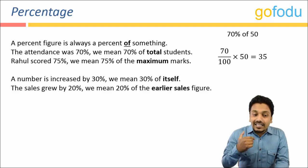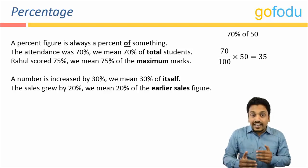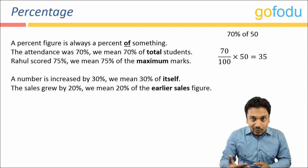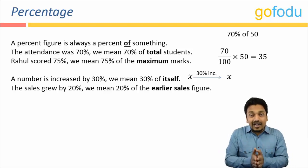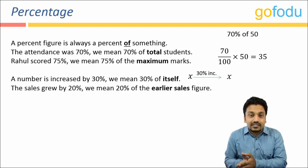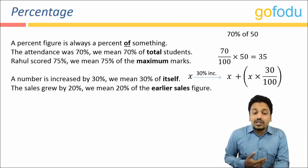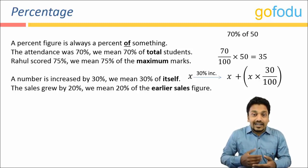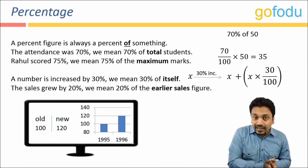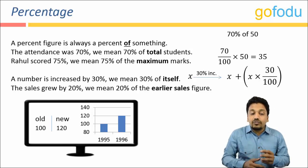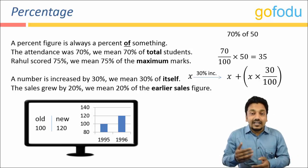If a number is increased by thirty percent, that means thirty percent of the number itself, since only one variable is involved. So if I take a number X increased by thirty percent, I add the increment — which is thirty percent of X, that is thirty upon hundred into X — to the original number X. Similarly, if sales grew by twenty percent in 1996, that means twenty percent of the previous sales. If sales in 1995 were hundred TVs, then in 1996 they would be one hundred and twenty TVs.